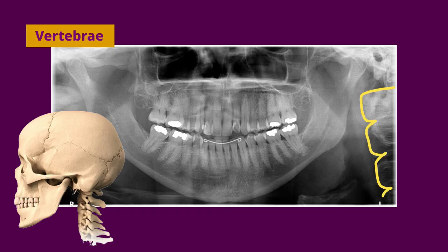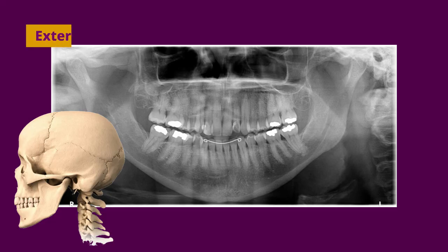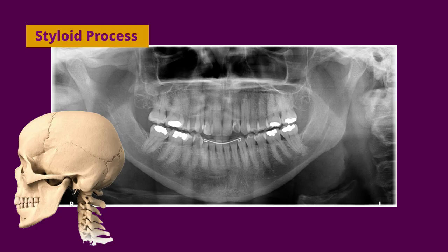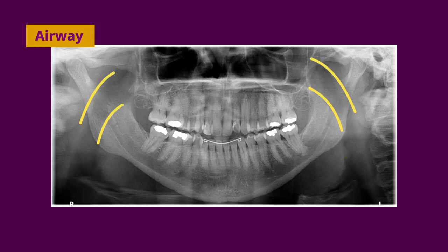Now let's look at anatomy around the outside of the panoramic X-ray. These box-shaped radiopacities are the vertebrae. This floating curved radiopacity just below the mandible is the hyoid bone, a horseshoe-shaped bone that lies just below the mandible. Posterior to the glenoid fossa is a small radiolucent circle — the external auditory meatus — a hole or opening in the temporal bone. This long pointed sharp projection of bone is the styloid process. Styloid comes from the Greek word stylos, meaning long and tapered like a pen or stylus. Finally, the shadow on either side of the panoramic X-ray overlaying everything is the airway.